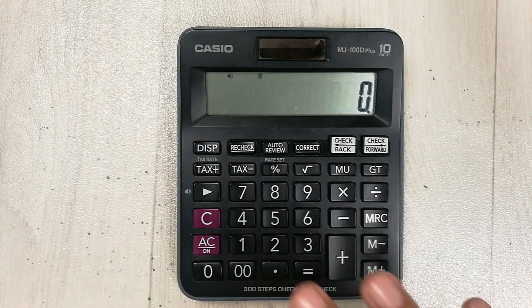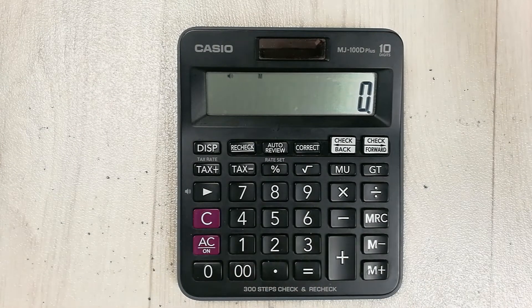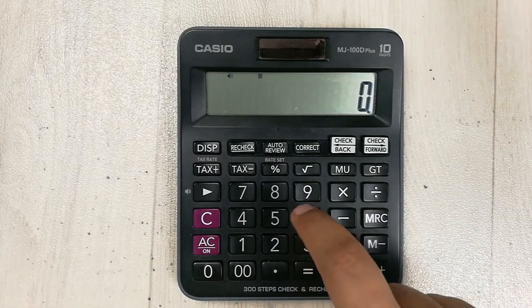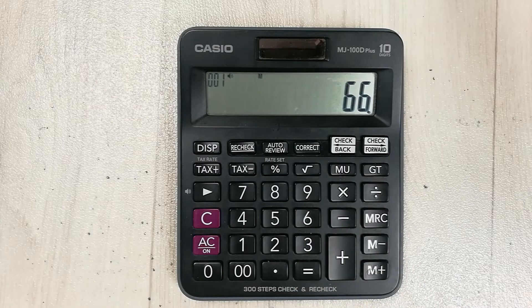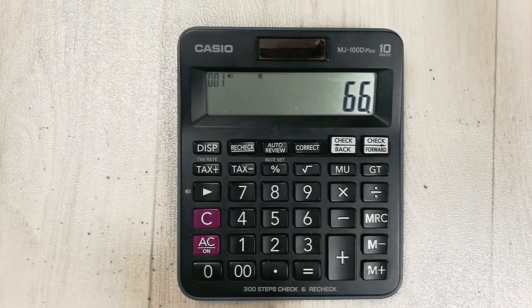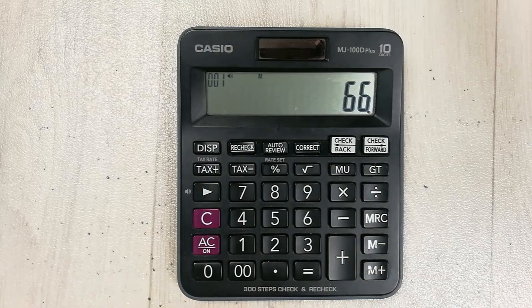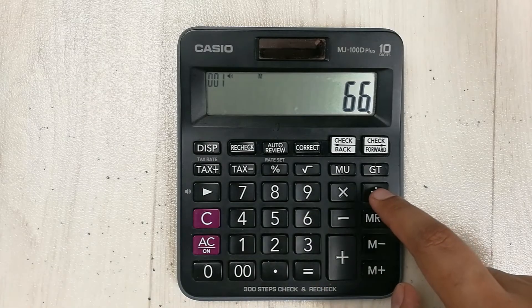Let's say your percentage is 66 percent and you want to convert this into CGPA. You divide this 66—press the divide button—divide by 9.5, and then press the equal button.